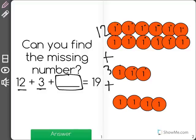First I'm going to find out how many I have so far. Well, here's 12, 13, 14, 15. So 12 plus 3 is 15.